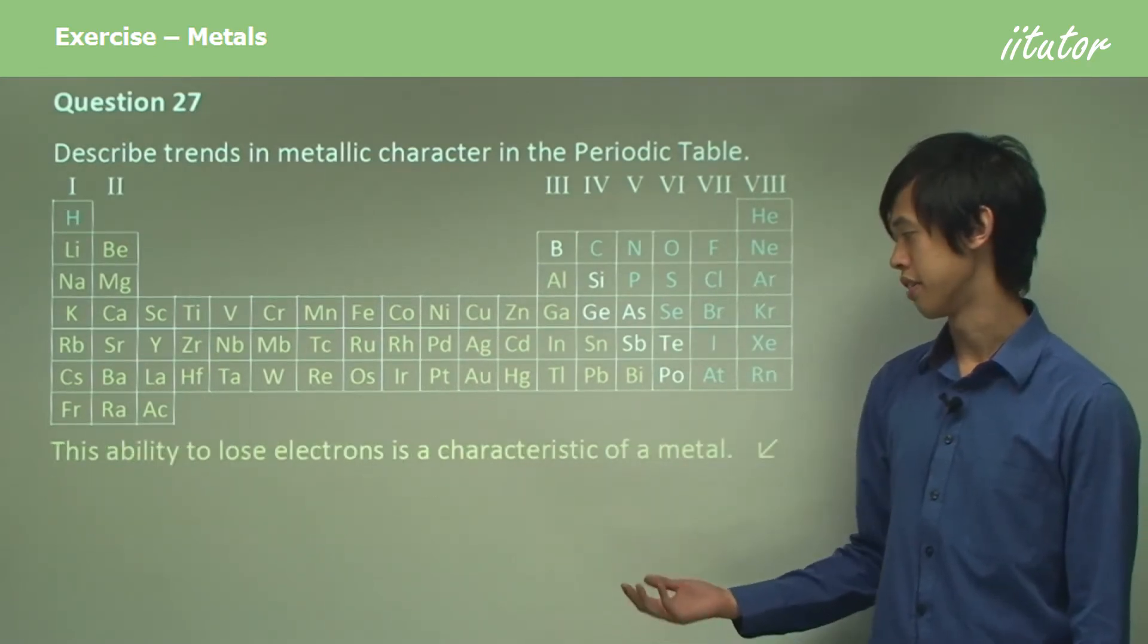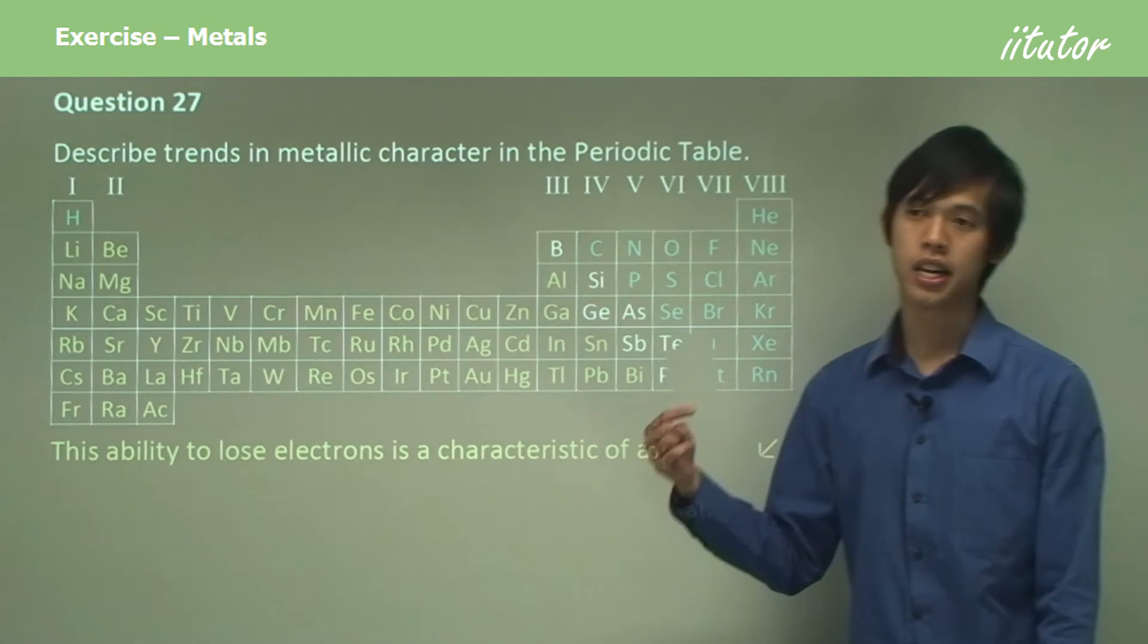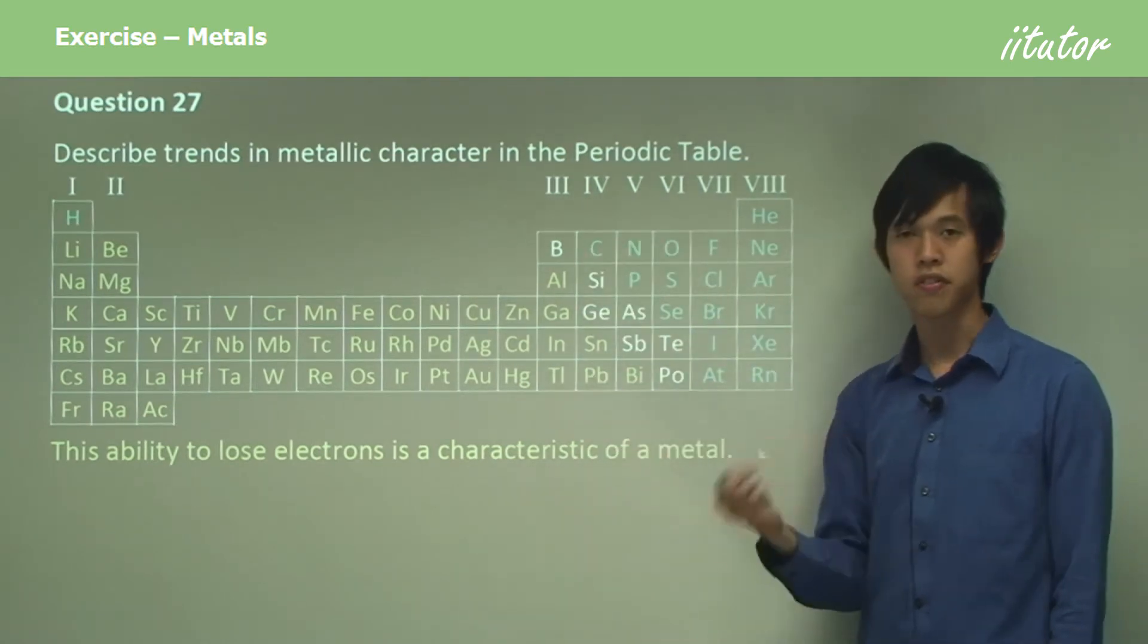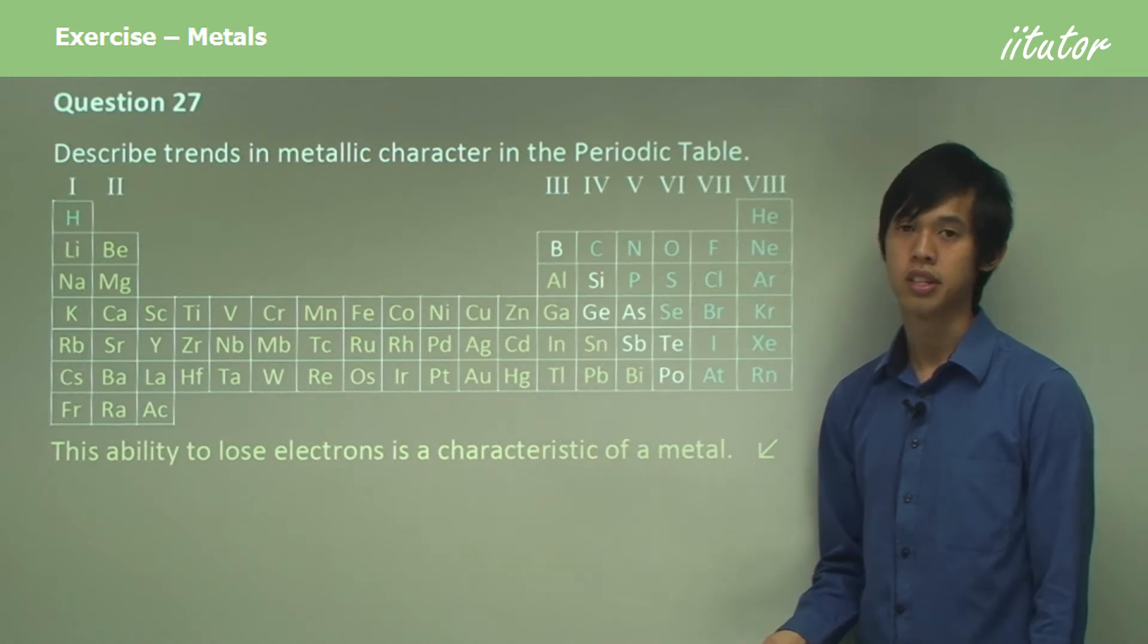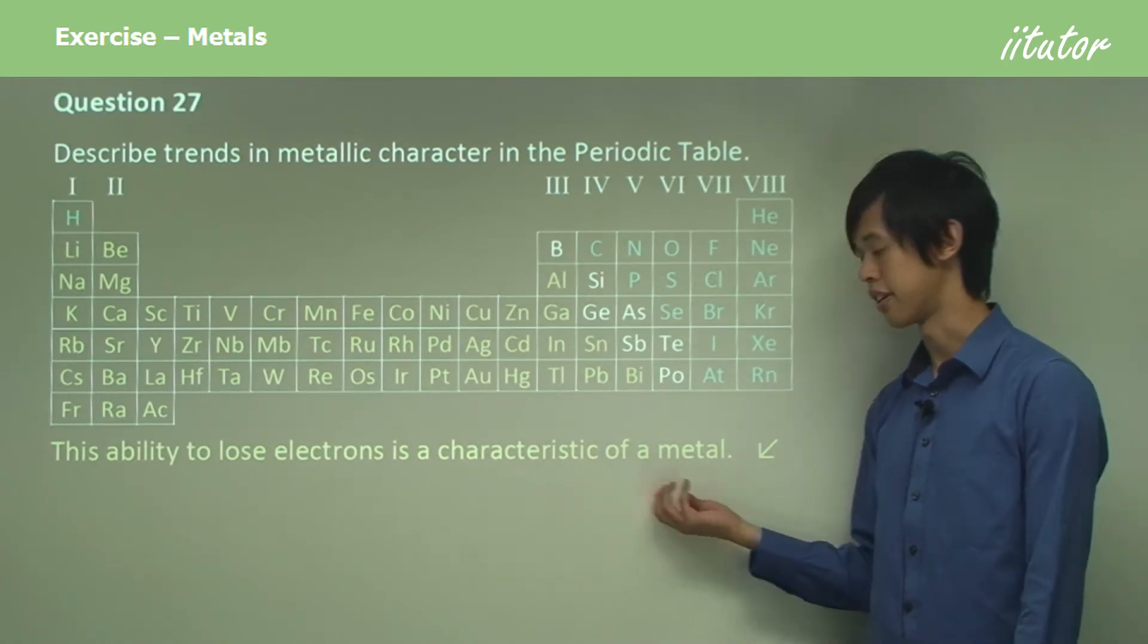This ability to lose electrons is a characteristic of a metal. As you go down, the electrons are so far away from the nucleus that they become weakly bound and they might lose those electrons. And losing electrons is a characteristic of a metal.